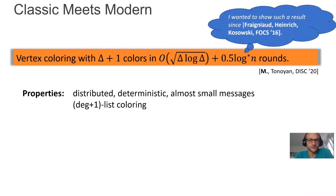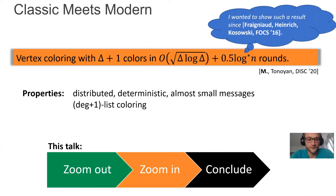Just a few words about the structure: this is a distributed algorithm, it's deterministic, it uses almost small messages, and it also works for list coloring. What's the structure of this talk? First, I want to zoom out a bit and tell you about the surroundings of this result — where should you locate this result. Then I will zoom in to this result, and at the end I will conclude.